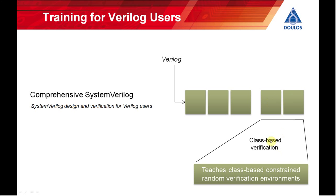The last two days — class-based verification — introduces the object-oriented programming features of System Verilog and teaches constrained random verification. This is where people coming from a Verilog or VHDL background sometimes start to struggle. Doulos instructors call this hitting the Thursday wall. It helps a lot if you already have some object-oriented programming experience. Hardware designers who know they won't become verification specialists sometimes skip these last two days, although they are essential if you're going to go on to learn UVM.